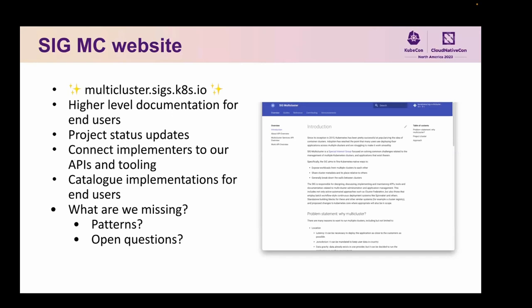What are we missing? What are the patterns that we should be describing? Currently it's mostly about what the APIs are, but not so much about how they all fit together and how they are actually used. So we're very interested in feedback on that, open questions, problem spaces that fit in with the SIG's concerns that we're not addressing, and ways to use all the existing APIs that we haven't described.